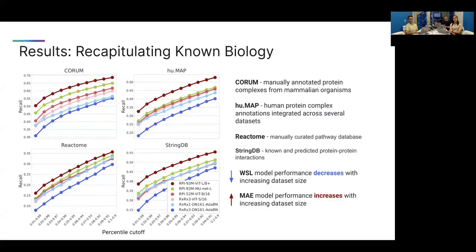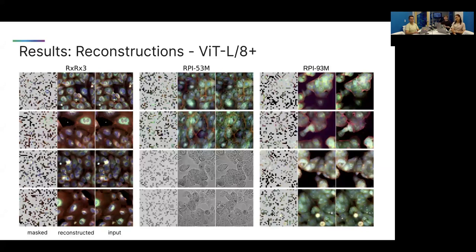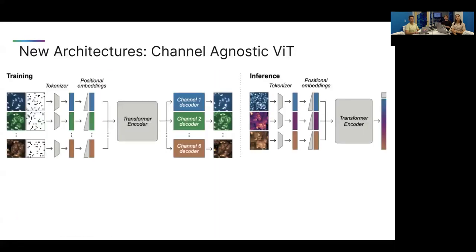It turns out that the more data you have and the more model parameters you have, the better performance you observe when training masked autoencoders with self-supervised learning, in terms of downstream ability to predict known relationships in biology across a wide variety of databases — from protein complexes to gene pathways. We did not observe the same phenomenon with weakly supervised learning; in fact, some of our results showed that weakly supervised learning could even have worse performance by increasing the dataset size, particularly the number of perturbations. Scaling the MAE on more data and with more model parameters yields better downstream performance, and the reconstructions also demonstrate the model is learning something useful about cellular morphology.